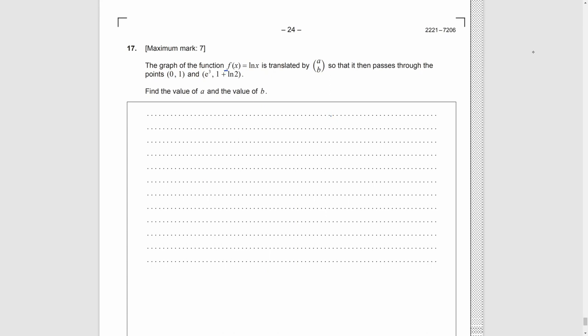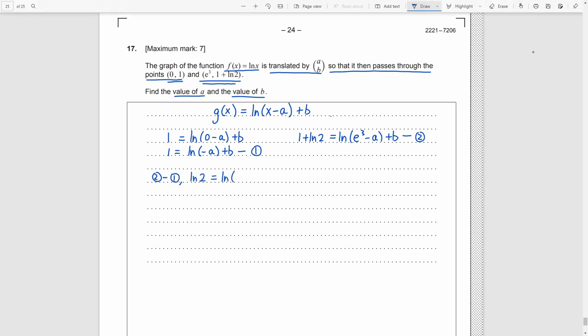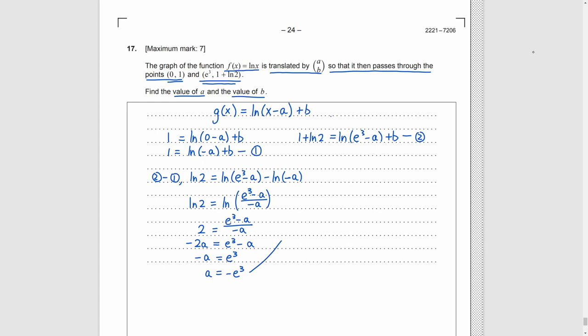Question 17. We have a function, natural log x, which is translated by vector (A, B), and it passes through (0,1) and (e cube, 1 plus natural log 2). We need to find A and B. So after translation, we just replace x by x minus A and add the whole function by B. Then substitute the two points above into the equation. By substituting (0,1), we get the first equation. By substituting (e³, 1 plus natural log 2), we get the second equation. We just need to solve simultaneous equations. Use the second equation minus the first one. Simplify it, and by the rules we learned in log transform chapter, we get A equals negative e³. Then we put it back to the first equation. We get B equals negative 2.